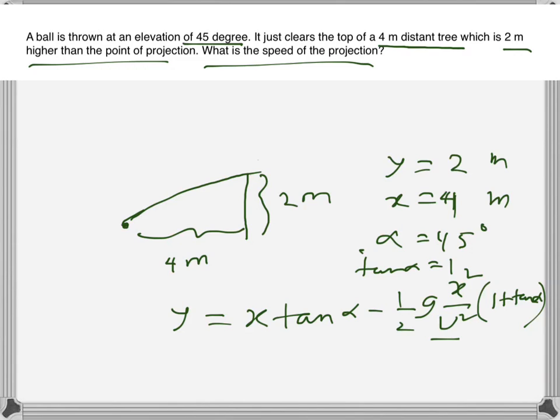y is 2, x is 4 times 1 minus half into 9.8 over u squared here and that will be 16 here